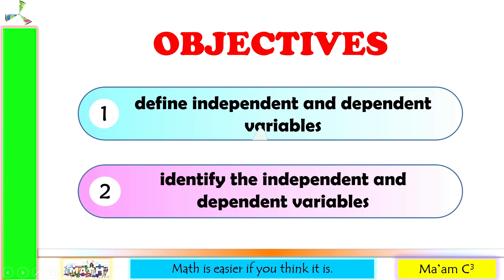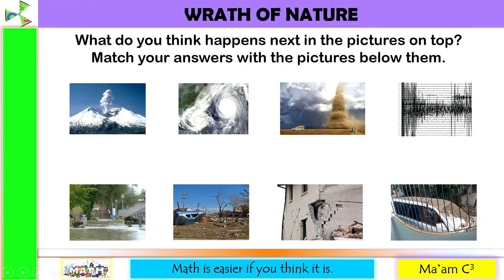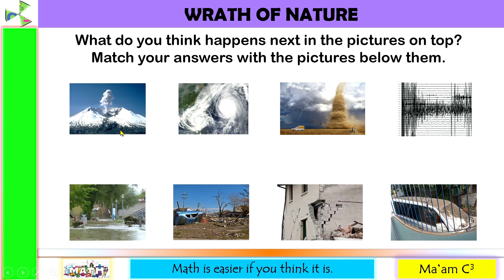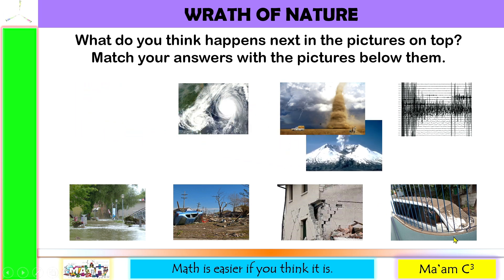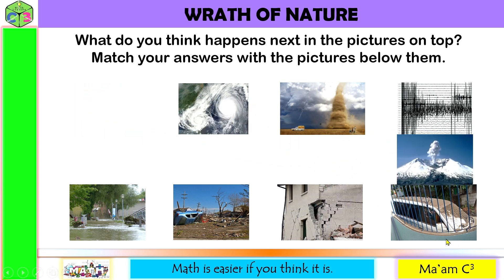Let's have a quick activity — Rate of Nature. What do you think happens next in the pictures on top? Match your answers with the pictures below them. This is a picture of a volcanic eruption, and after it there would be ashes all over the place, like what happened in the eruption of Taal volcano last January 2020.